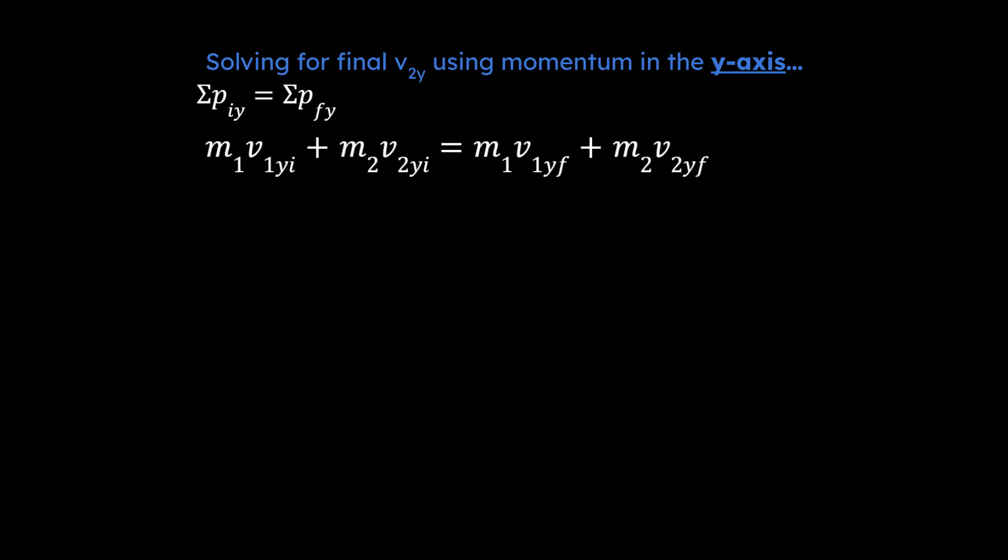Now we're going to do something similar for the y-axis. The sum of the momentum in the y initially speaking is equal to the sum of the momentum in the y finally speaking, and so that's conservation of momentum in the y-axis. So really crucial, this is the big idea. You can do the conservation of momentum in the x and now we're doing the conservation of momentum in the y.